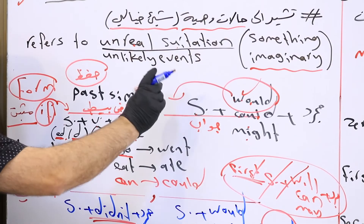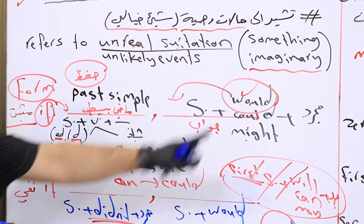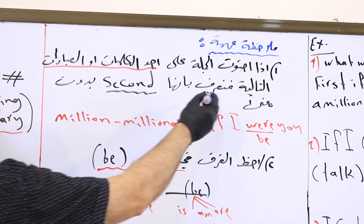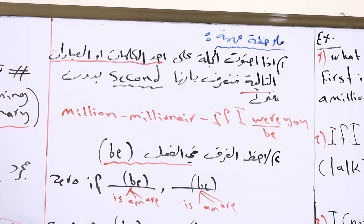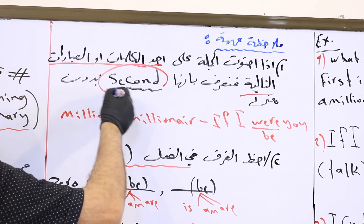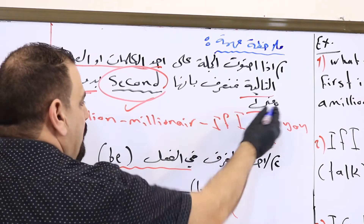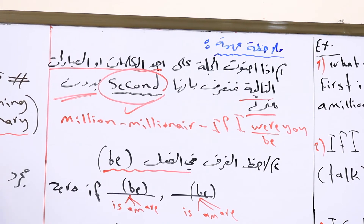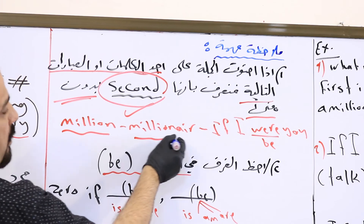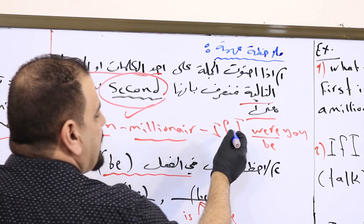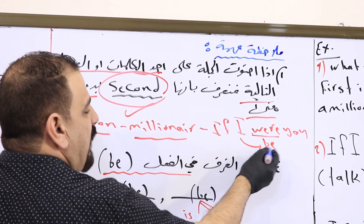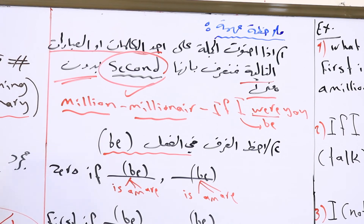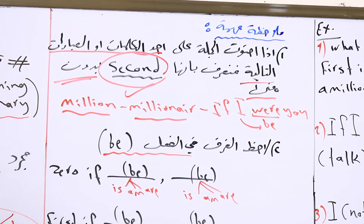Important note: if the sentence contains certain keywords you can identify it as second conditional without relying on meaning. For example: the word 'million', 'millionaire', or the expression 'if I were you'. If you find any of these in a sentence, you immediately know it's second conditional.